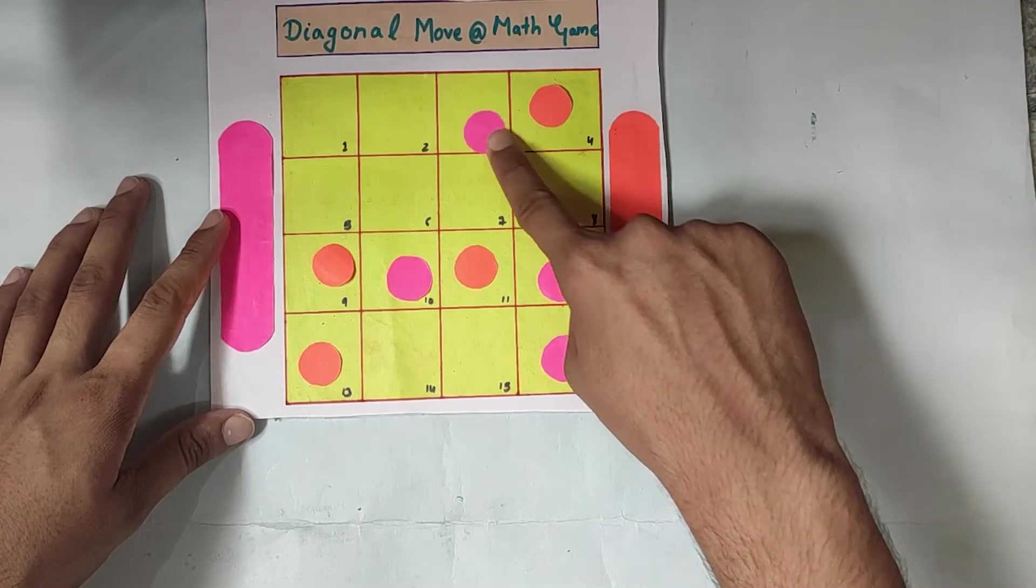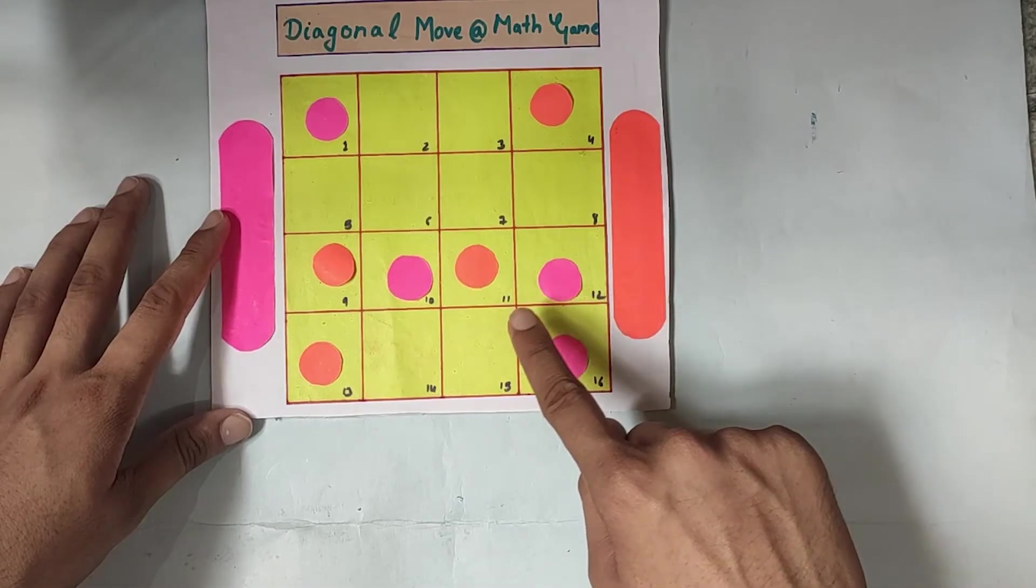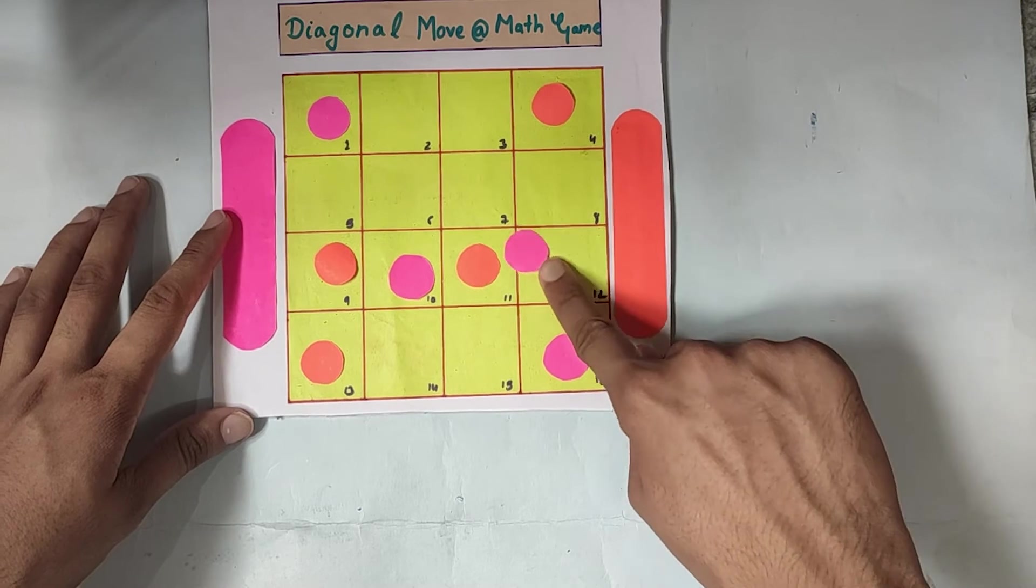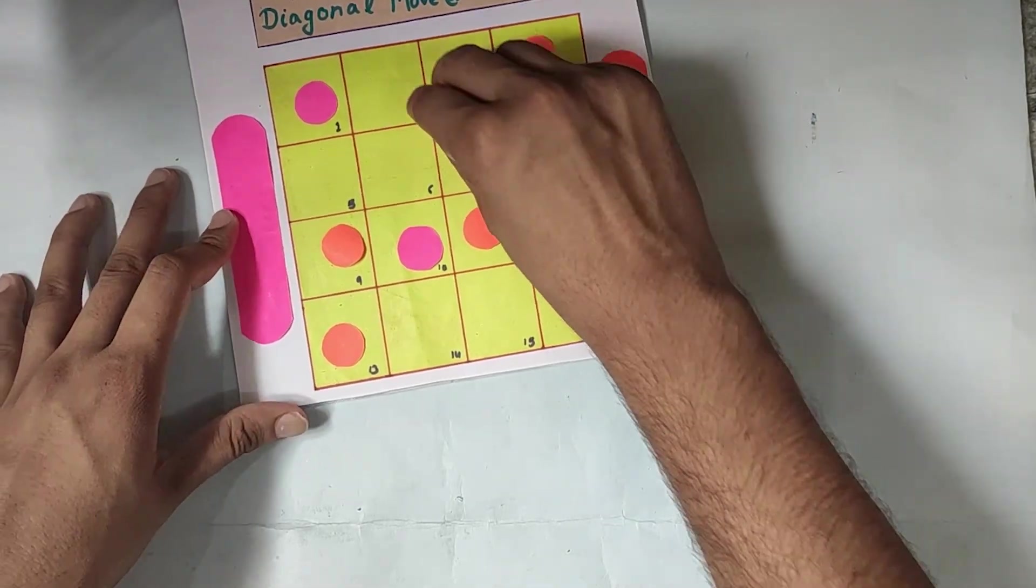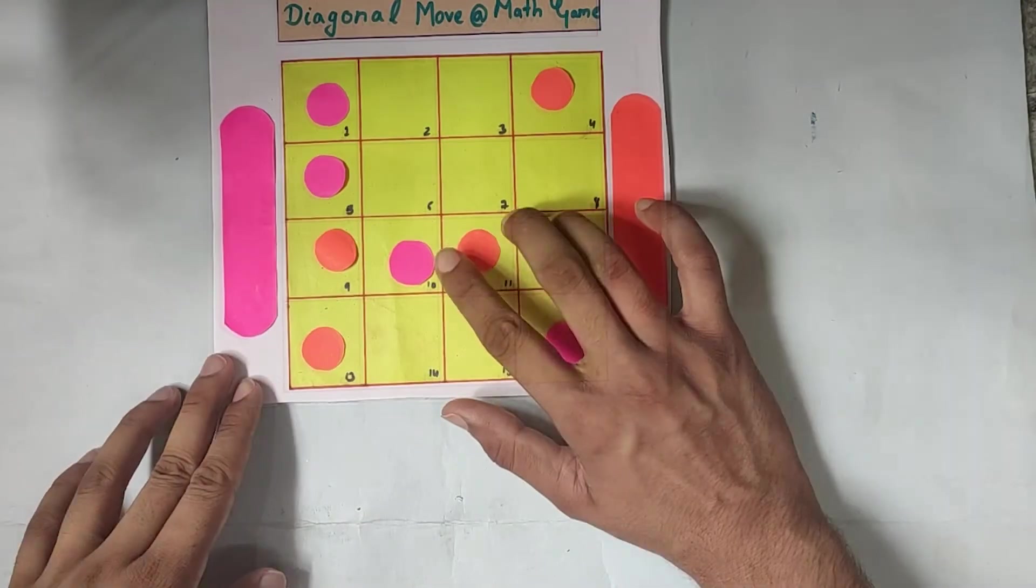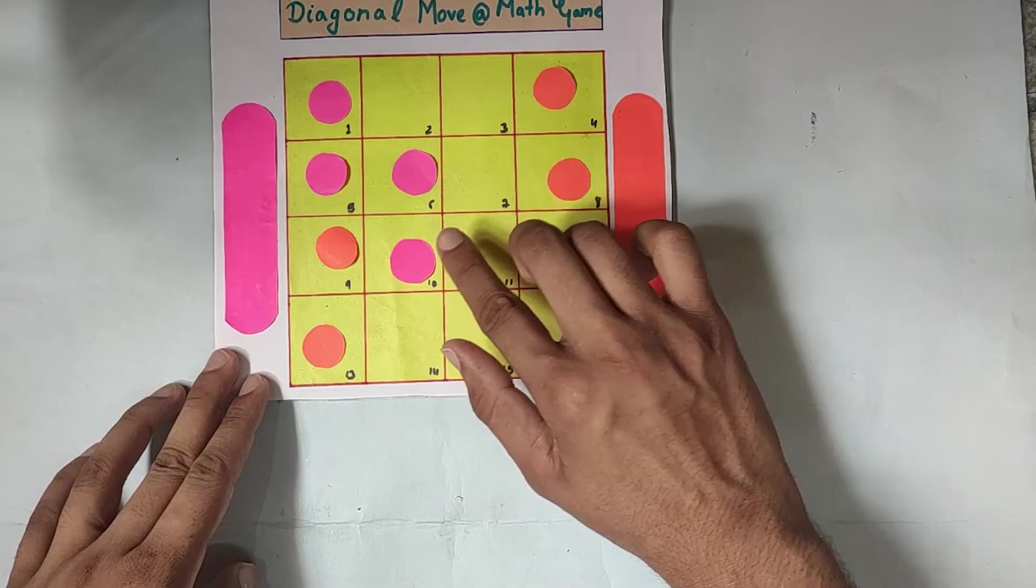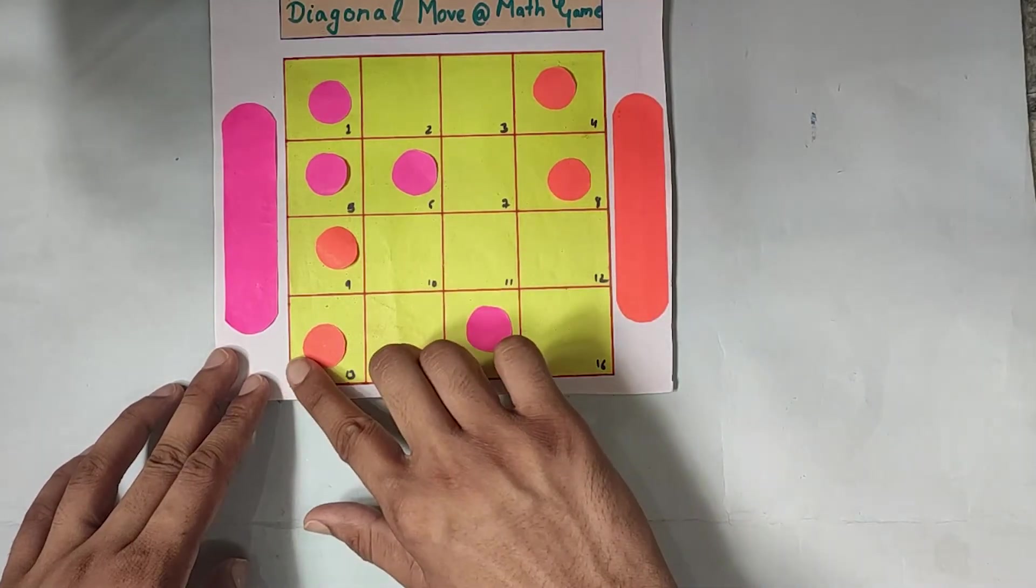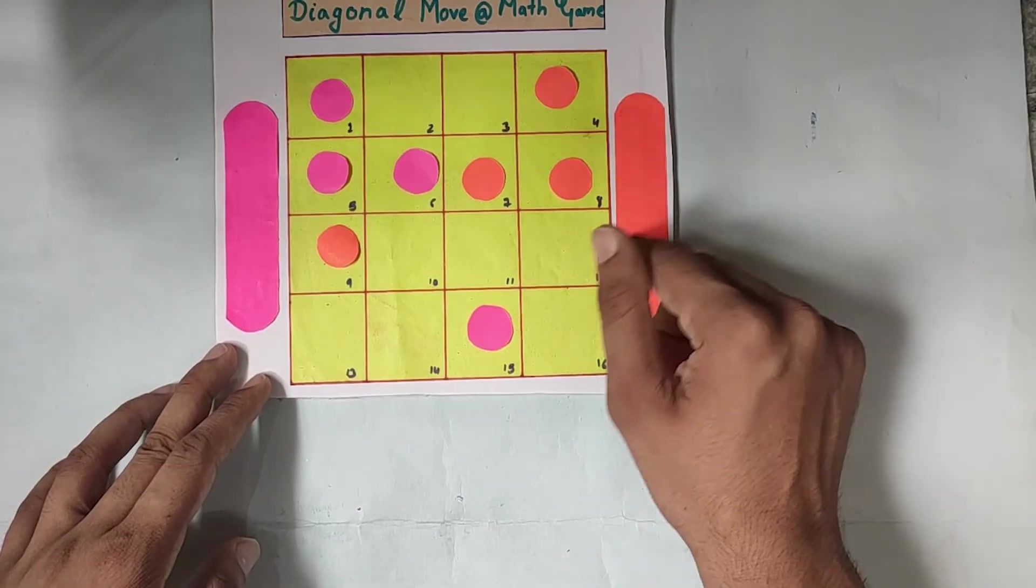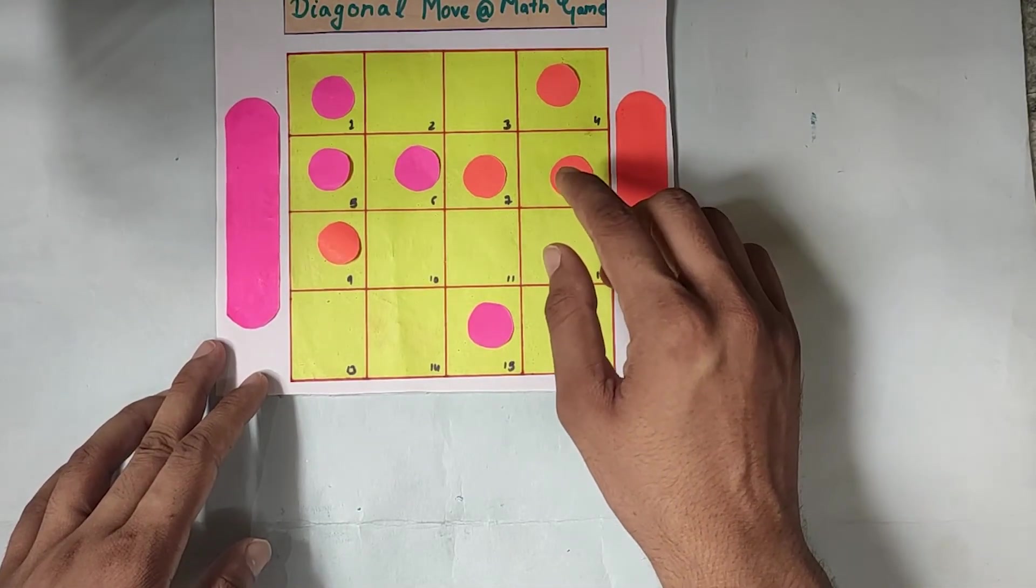Similarly, it's six step, seven step and eight step. Now, let's move this ninth step to here and it's ten step. Fourteen steps are over, but still the game is not completed.